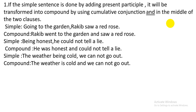Next sentence: 'Being honest, he could not tell a lie.' Here we have to use subject 'he' first, then the be-verb 'was', since the other clause is in the past tense. After that, we use 'and' in the middle of the two clauses. The compound sentence is: 'He was honest and could not tell a lie.' Is it clear to you? Yes, I think so.